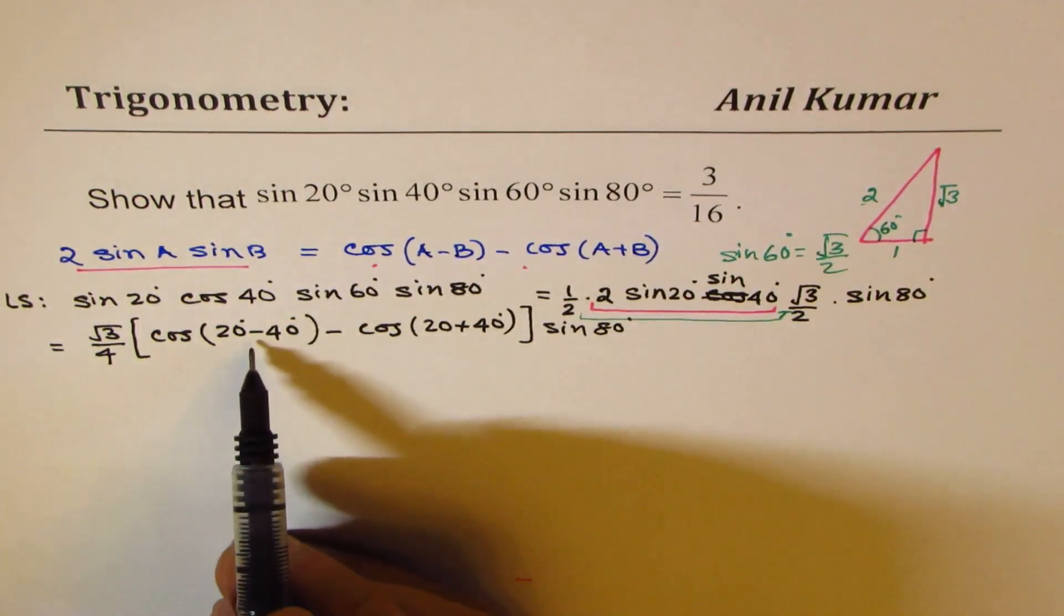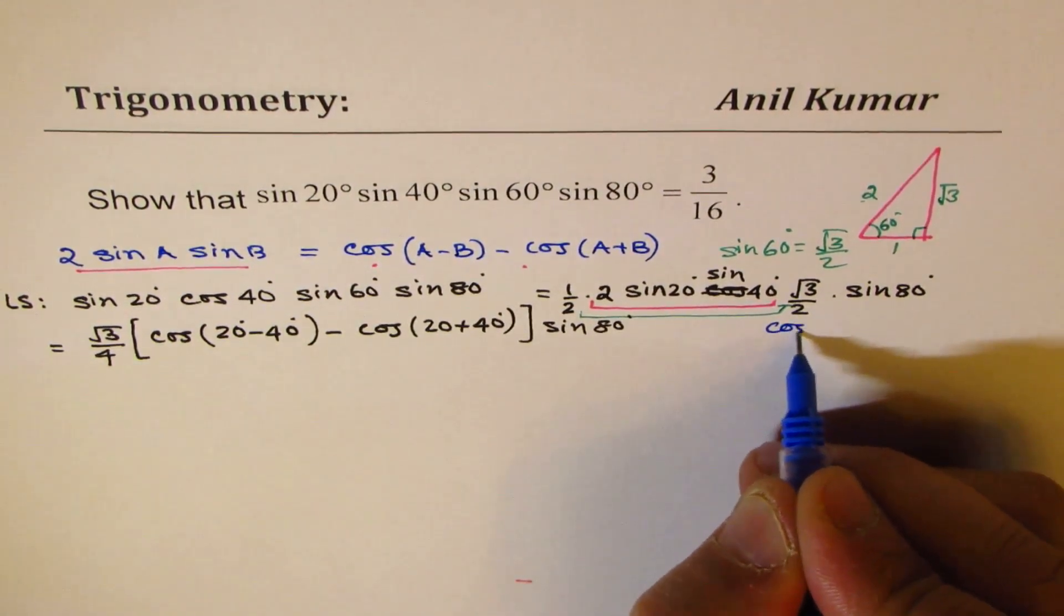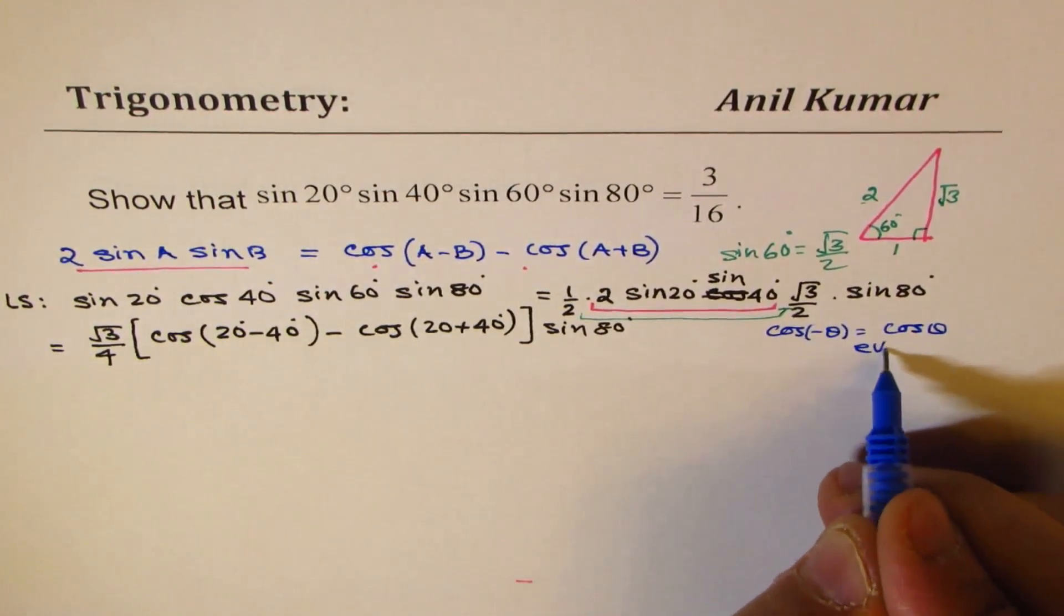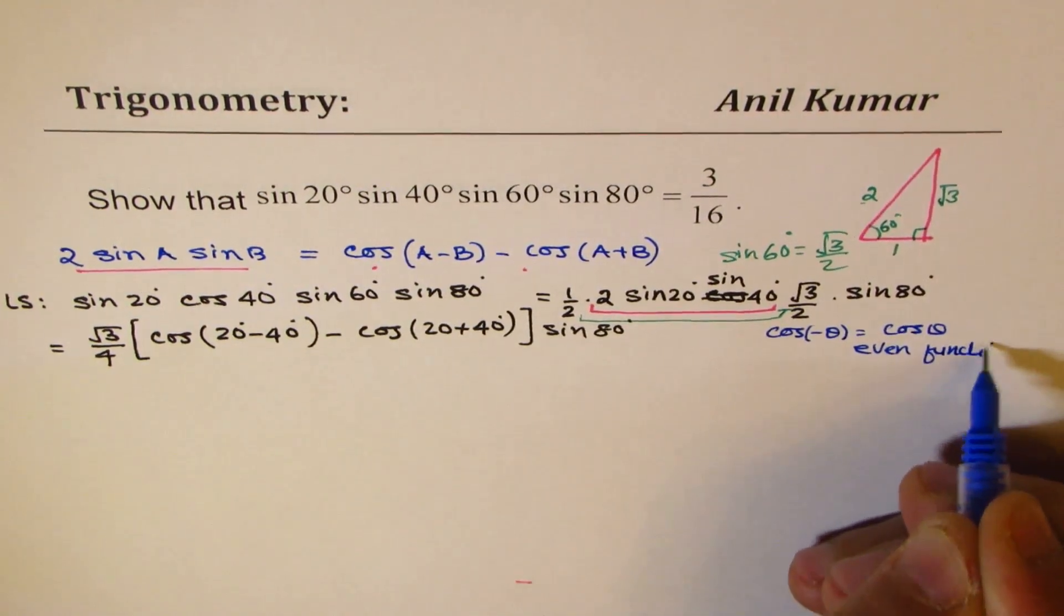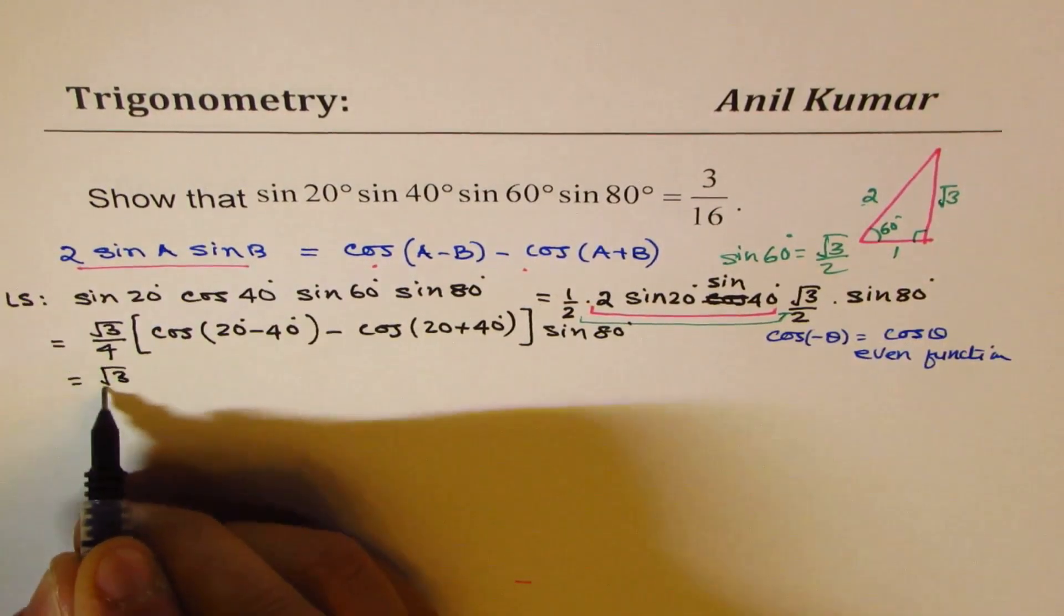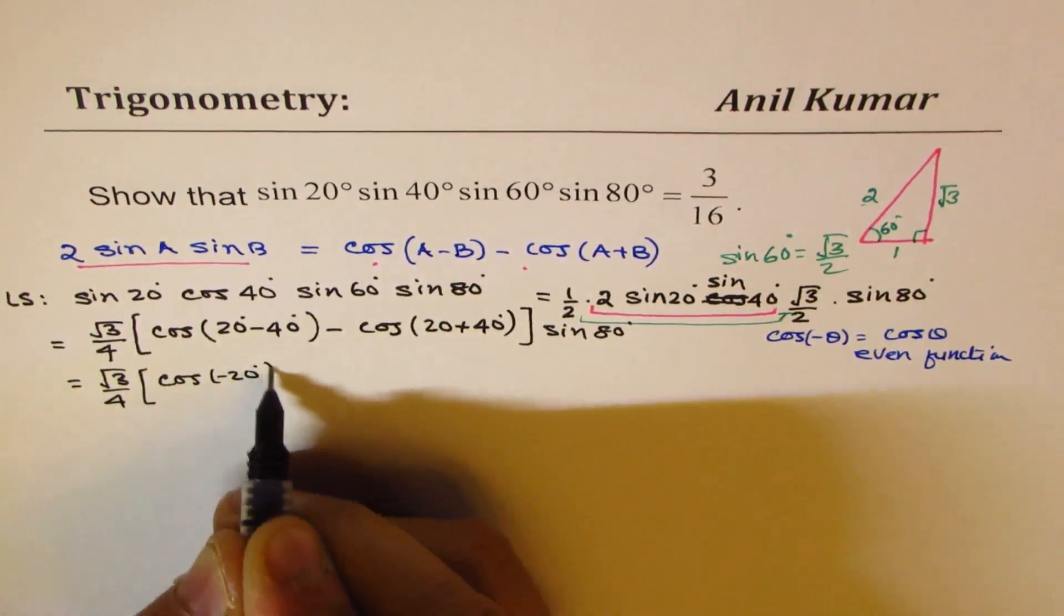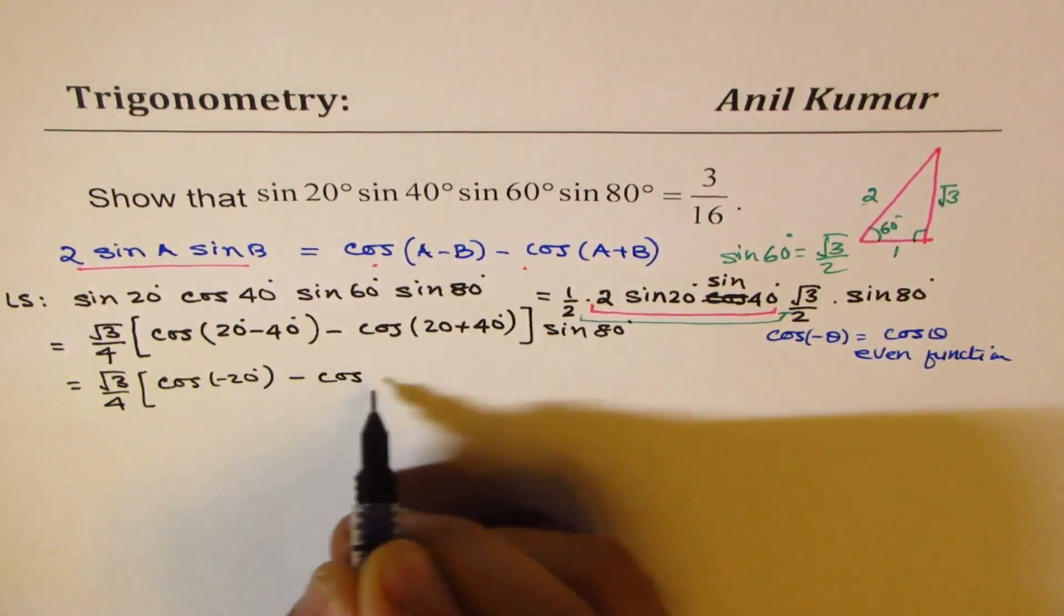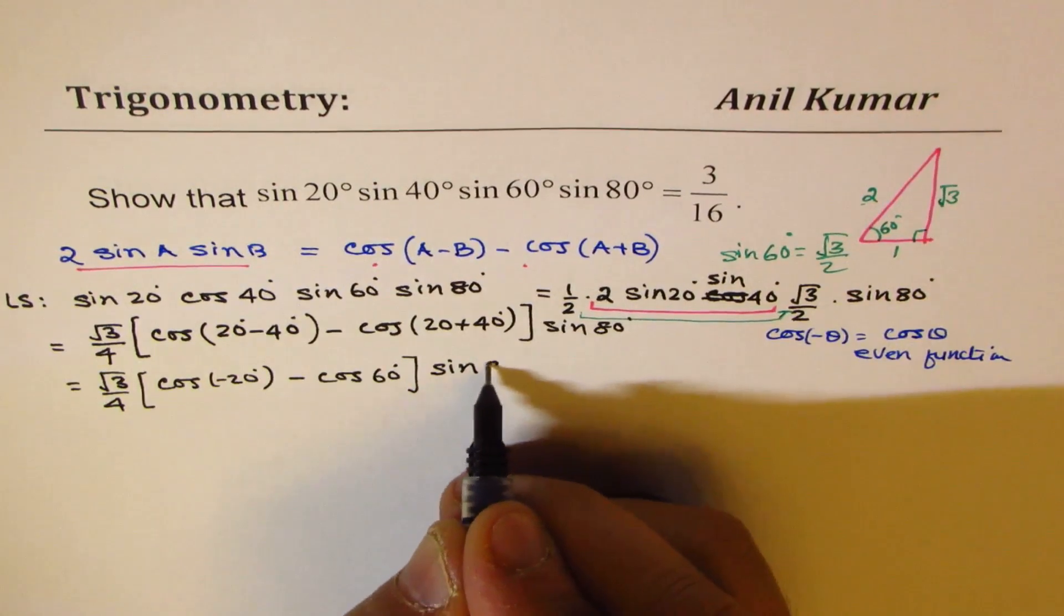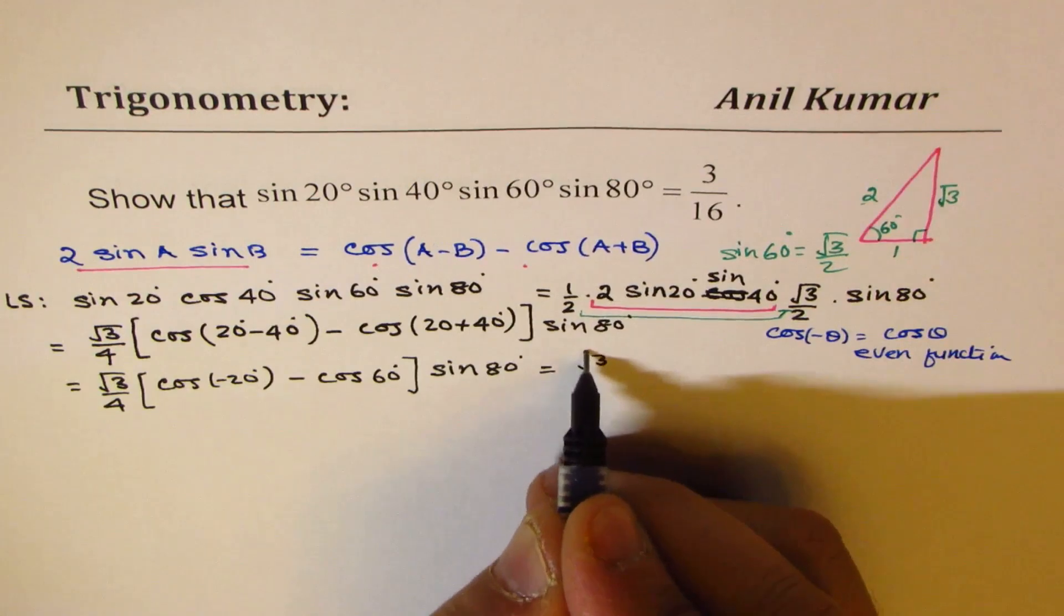Now we are going to get a negative term here, which is minus 20. I hope you remember that cos(-θ) is actually equals to cos θ, since cos is an even function. So let's continue. So we have √3 over 4. In this case, we have cos(-20°), minus cos 60°.